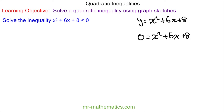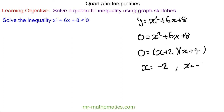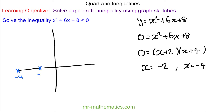We can solve this equation by factorizing. We need two numbers that multiply to make eight but add to make six, and these are positive two and positive four. So when y is equal to zero, x will equal negative two and x will equal negative four. This is our sketch — we have negative four and negative two on the x-axis, and when x is equal to zero, y will be eight.